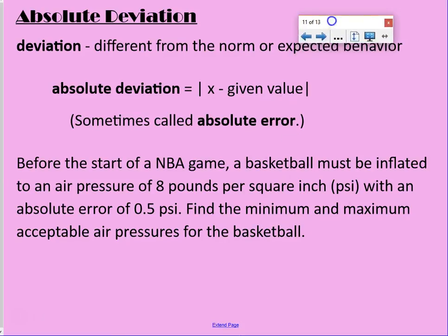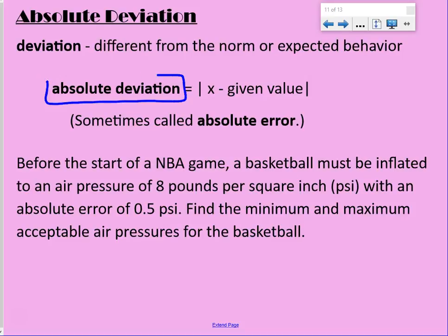Absolute deviation is the application of absolute value equations. Deviation means different from the norm or expected behavior. Absolute deviation equals the absolute value of x minus your given or standard value. It is also sometimes called absolute error.